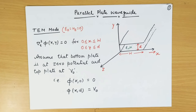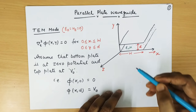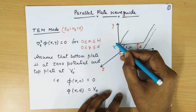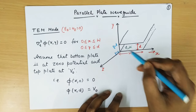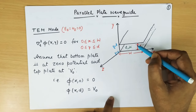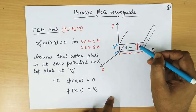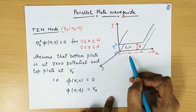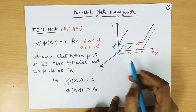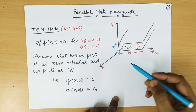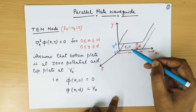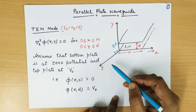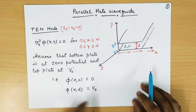Let us consider a Parallel Plate Waveguide having two plates. One plate is at y equal to D, another one is at y equal to 0. So there is a separation of D between these two plates. Assume the width of this plate as W, oriented in the x direction, and this Parallel Plate Waveguide is kept along the z direction so that the wave can propagate in the z direction.